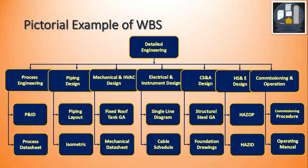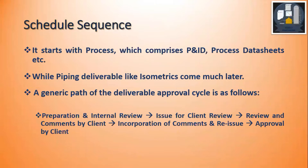These are just examples — there are many more deliverables, this is just for illustration. As we see in EPC, the phases are in sequence but there are considerable overlaps. Within the detailed engineering disciplines, it starts with process, but there are considerable overlaps between disciplines. Process comprises many deliverables like P&IDs, while piping deliverables such as isometrics come quite later.